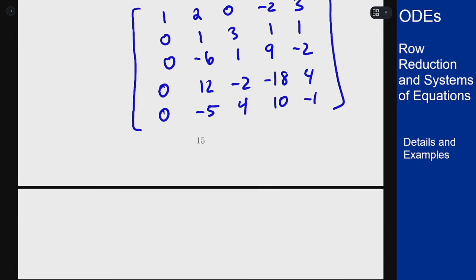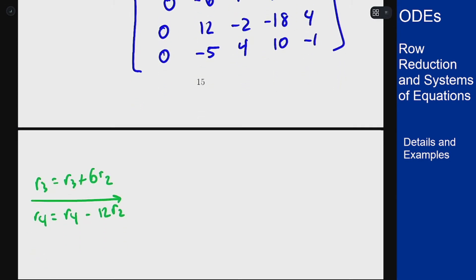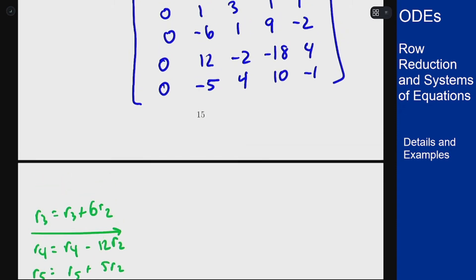So my next steps in this process will be row 3 is row 3 plus 6 row 2 to cancel out that minus 6. Row 4 is row 4 minus 12 row 2. And the last one will be row 5 is row 5 plus 5 row 2 because that will cancel out the minus 5.